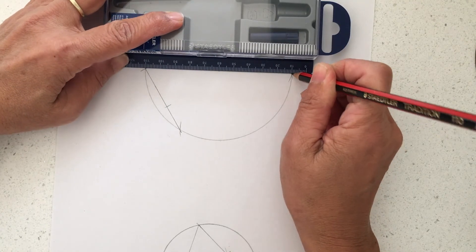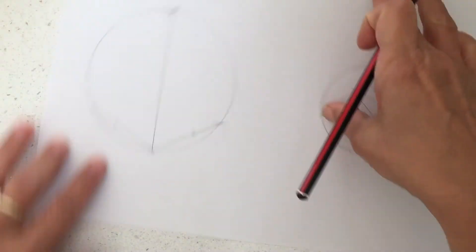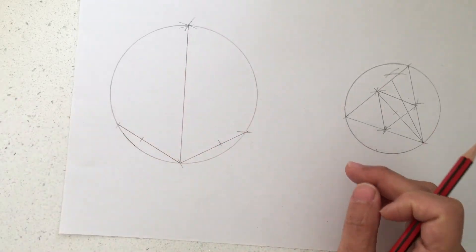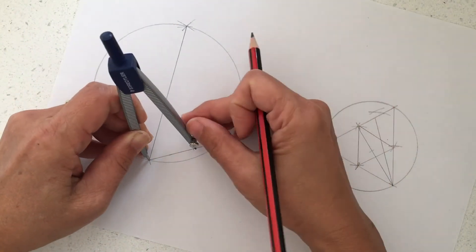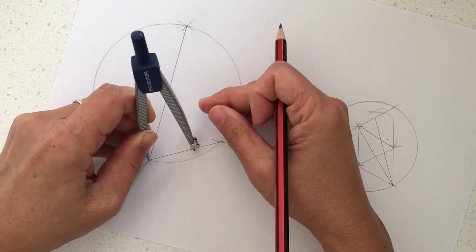And then you've just bisect this angle into two. Now you can keep going by, so I've already have one line here.